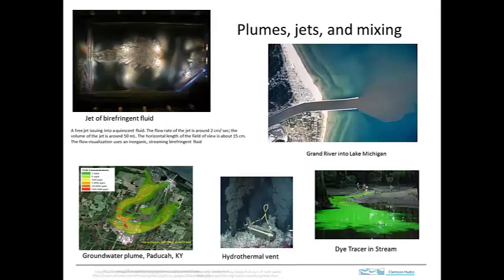Another important thing that happens with dispersion is that the mixing process that causes the plume to spread out can also bring two reactive molecules into contact and facilitate chemical reactions. So dispersion is going to be an important process in controlling concentrations in plumes by essentially a dilution process, but also it will be important in facilitating chemical reactions.